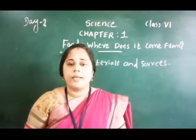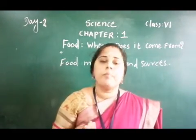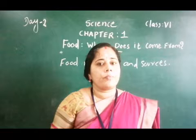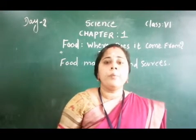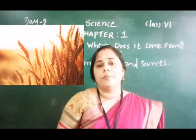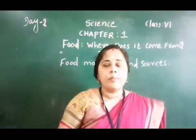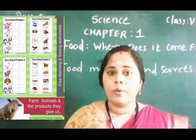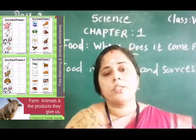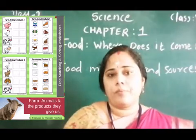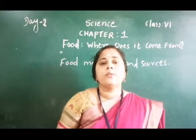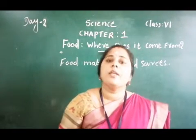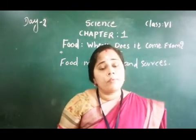We all know that fruits and vegetables we get from plants. And we already mentioned in the previous class that grains like rice and wheat are obtained from paddy fields and wheat fields. Some other food products — like milk, fish, meat, chicken — all these we get from animals.